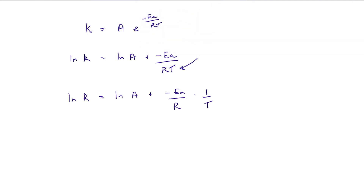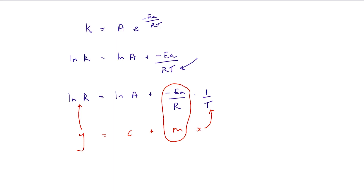We can now see this is in the form y equals c plus mx. If we plot 1 over T on the x-axis against the natural logarithm of the rate constant on the y-axis, the gradient m would be minus the activation energy divided by the gas constant, and the natural logarithm of the pre-exponential factor would be the intercept with the y-axis.